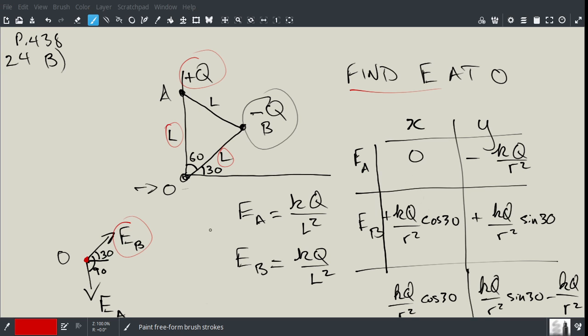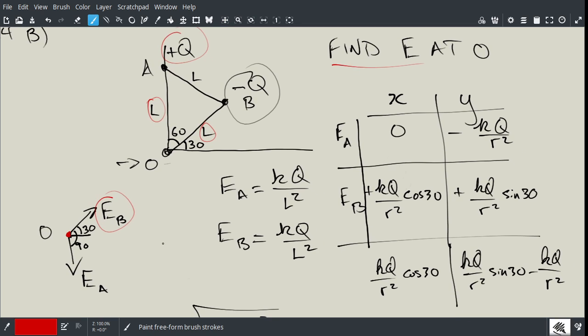So essentially, what I'm doing here is I'm going to break up EA and EB into X and Y components, and that's what I've done here. So EA has no X component, it's completely vertical, so the X is 0. EA has a negative Y component which is equal to KQ over R squared. In this case, R is simply L. And then for EB, we have two components.